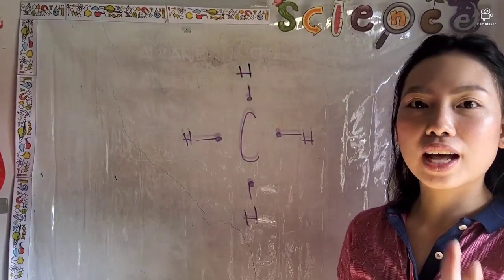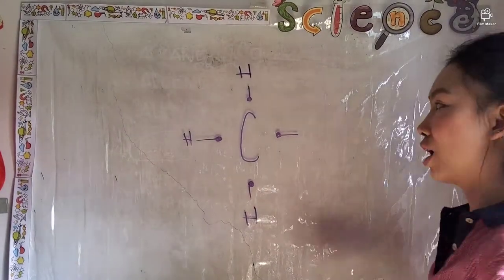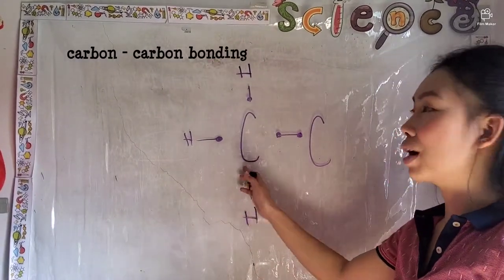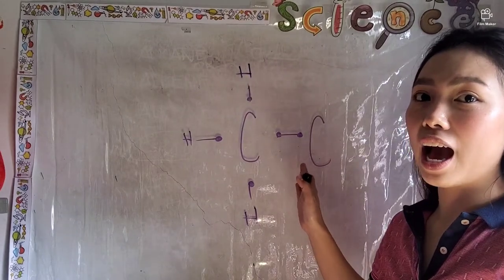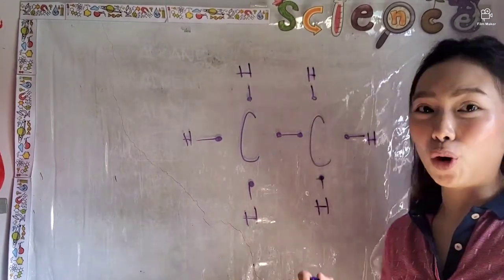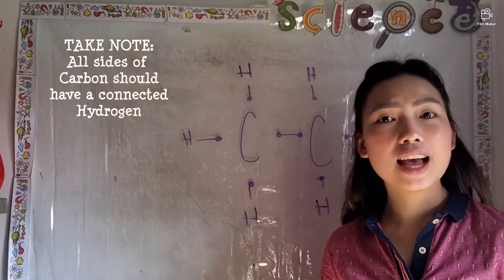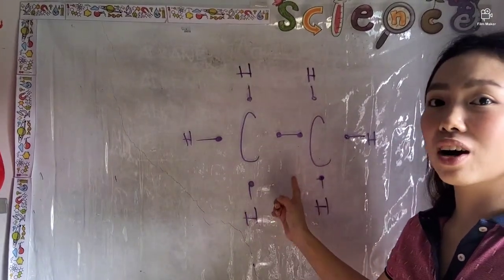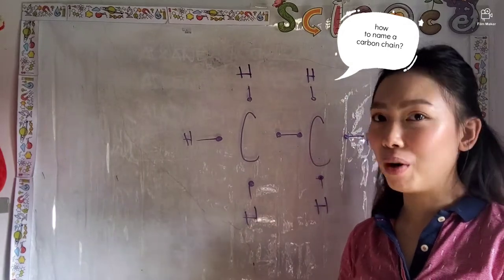Now, what if we have 2 carbons? We remove one H and replace it with another carbon. This is now a carbon-to-carbon bonding — carbon bonded to another carbon. Since it is connected to another carbon, that carbon also needs hydrogen connected to it. In hydrocarbons, all sides of carbon must have hydrogen connected. Now there are 2 carbons present in the carbon chain.